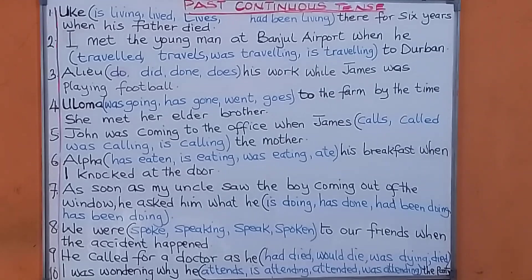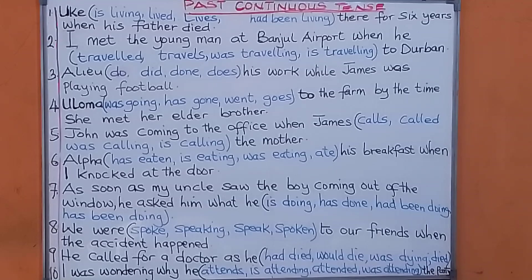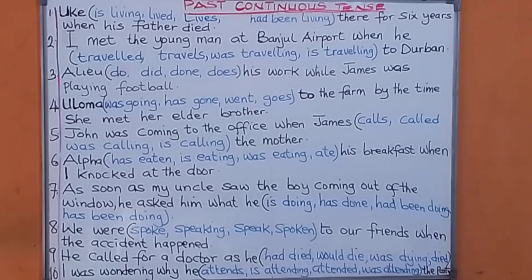In past continuous tense, you are talking about two past events happening at the same time. One was going on at the time the other one happened. You don't use it for past habitual action. One was going on at the time the other one took place — both events were happening at the same time.